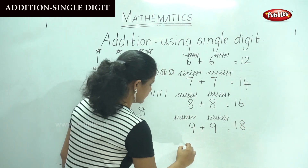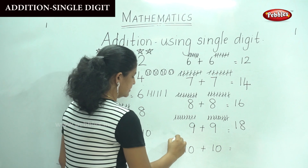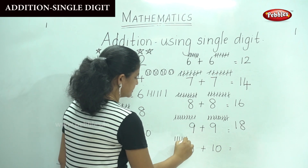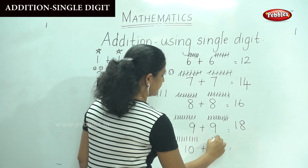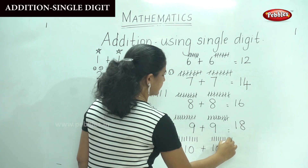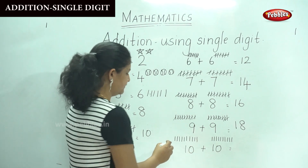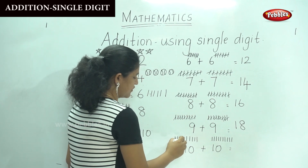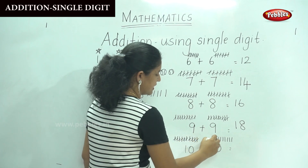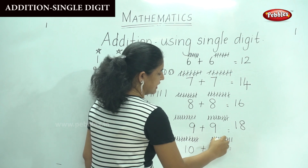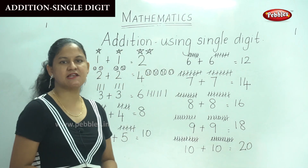And the next number is 10 plus 10. Drawing 10 sticks on each side: 1 through 10. Are you ready to count with me to get the answer? 1, 2, 3, 4, 5, 6, 7, 8, 9, 10, 11, 12, 13, 14, 15, 16, 17, 18, 19, 20. So 10 plus 10 gives us number 20.